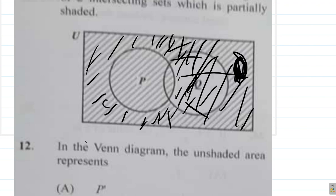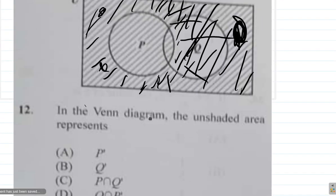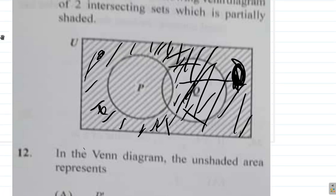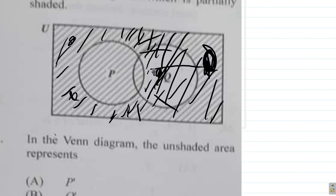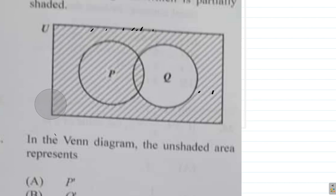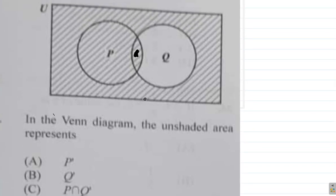It would be all around here. Q intersect P complement. P complement would be this and Q is this. The unshaded area includes—let's look again at the unshaded area. You see, in here, Q intersect P complement will not be there.